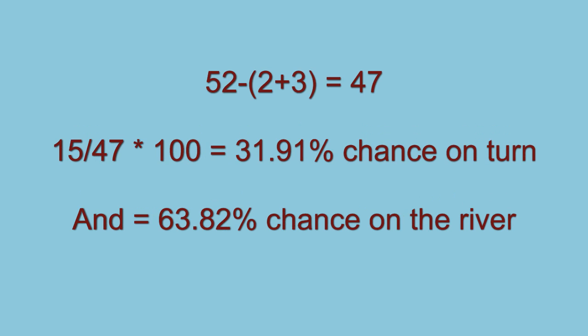The true calculation is done by working out the number of cards left in the deck: 47, that's 52 minus 2 in our hand and 3 on the board. Then 15 over 47 times 100 equals the chance of finding it on the turn, 31.91%. Multiply this by 2 for the chance of it coming on either the turn or the river, giving 63.82%.